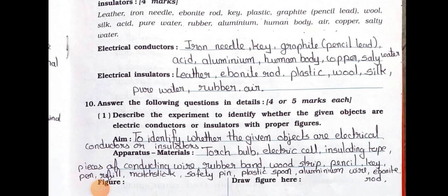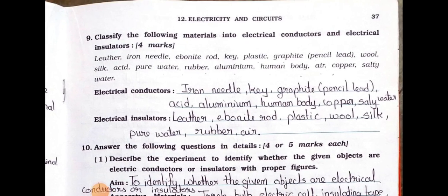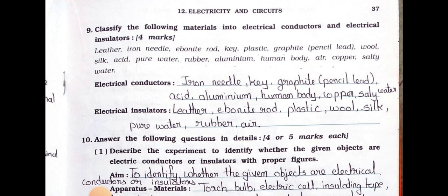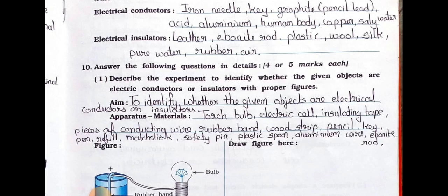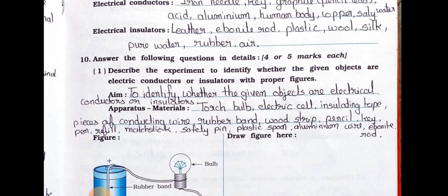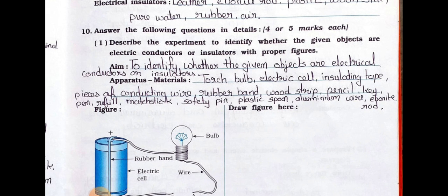Hello students, hope you all are fine. Today we'll see standard six, subject science, chapter number 12: Electricity and Circuit. In the previous video we covered up to main 9. Today we'll see main 10 — answer the following questions in detail, carrying four or five marks each.